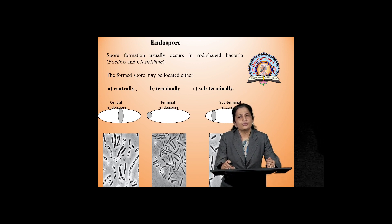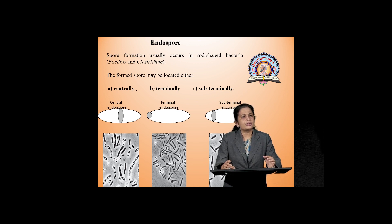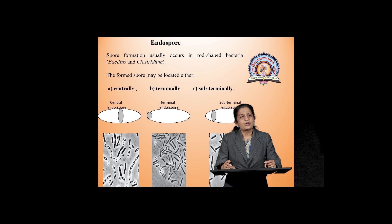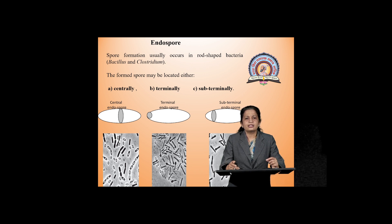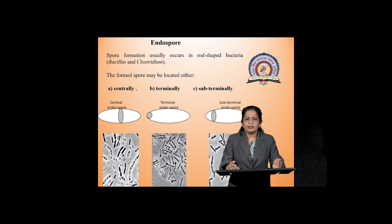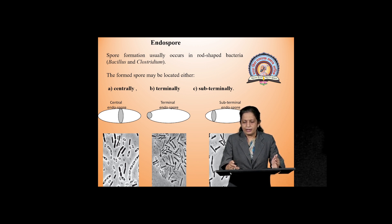Endospore formation usually occurs in rod-shaped bacteria like Bacillus and Clostridium; in these genera it is very common. The position of these spores is specific in different bacterial cells. In some bacteria they are located at the center — therefore spores can be centrally located. Sometimes spores are located at one end, and this position is known as terminal location. In some cases they are not exactly at the center or terminal but in between, and this position is known as sub-terminal endospore.